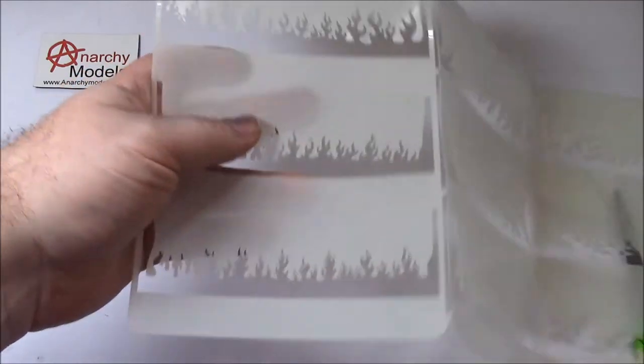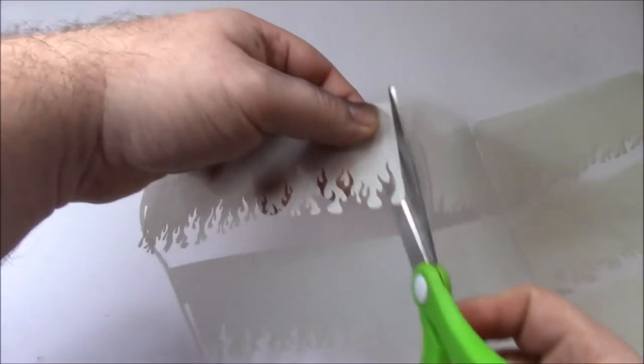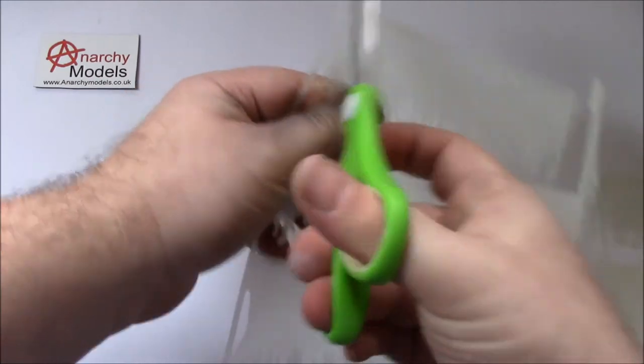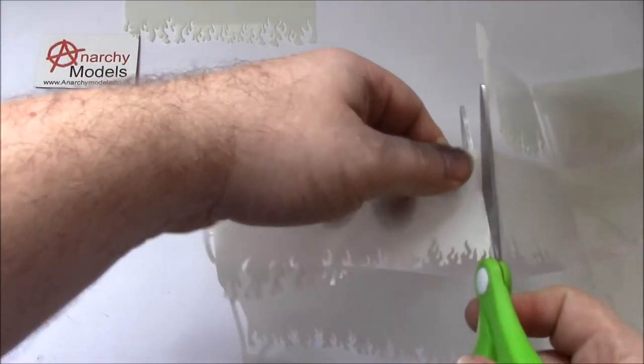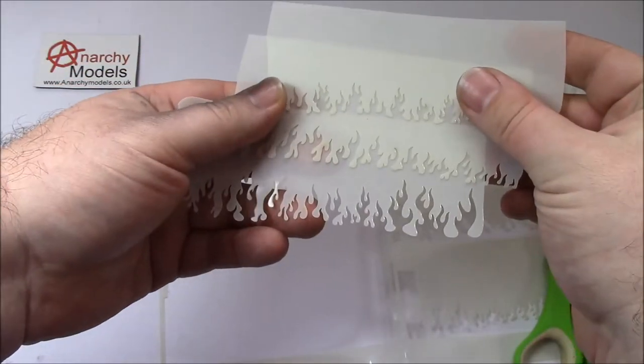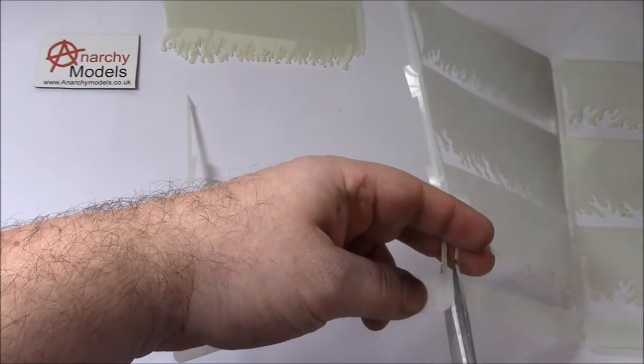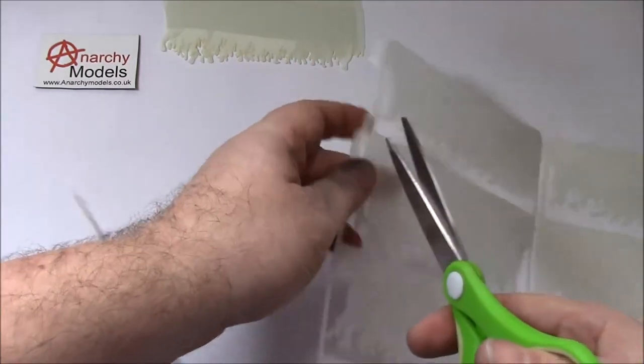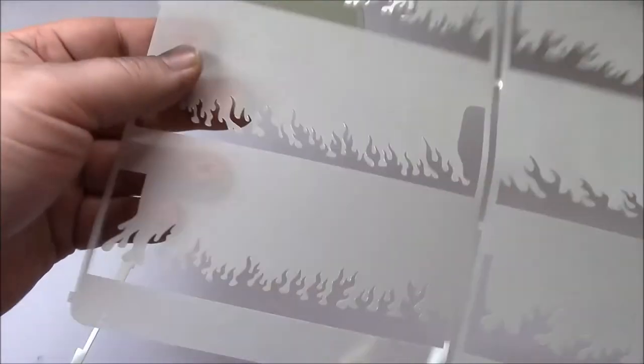Today I'm going to be working with the straight flames. First off, we need to take them off the carrier sheet. Just use some scissors and snip them off, so you end up with something like this. We now have three different straight flames. We can just throw away the rest of this sheet, and until you actually want to use these ones, you may as well just leave them on the sheet.